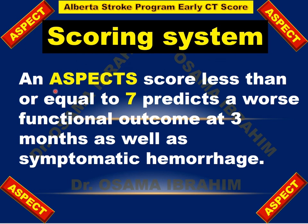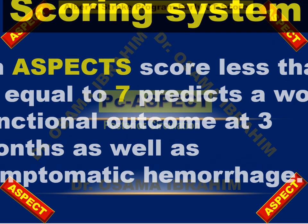The scoring system shows that an ASPECTS score less than or equal to 7 predicts a worse functional outcome at 3 months as well as symptomatic hemorrhage — as we saw in the practical daily case in the previous slide.